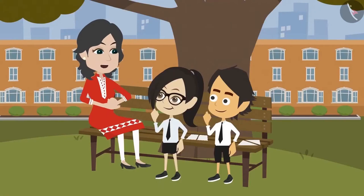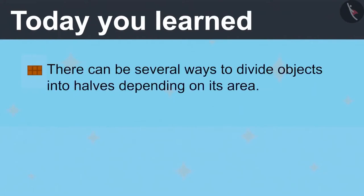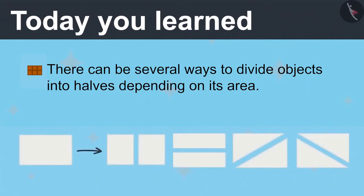I have understood. This means the paper is measured based on its area, so we can divide it into half in any way. We just have to take care that the two parts are of the same area. Absolutely right, Vandana. Today you learned there can be several ways to divide objects into halves depending on its area, like Vandana and Ayushman divided the paper into two halves in different ways.